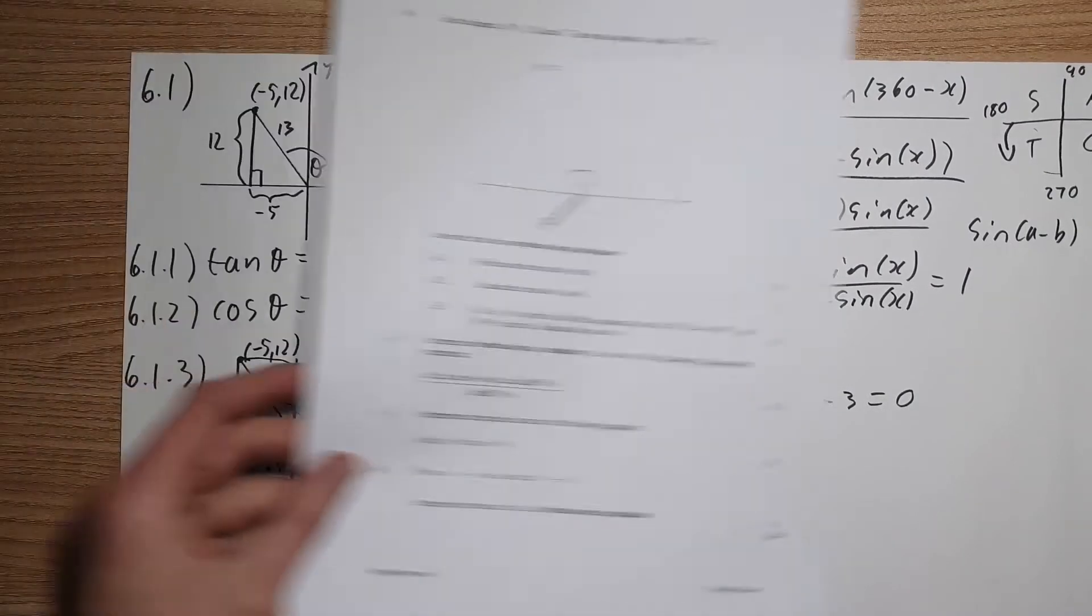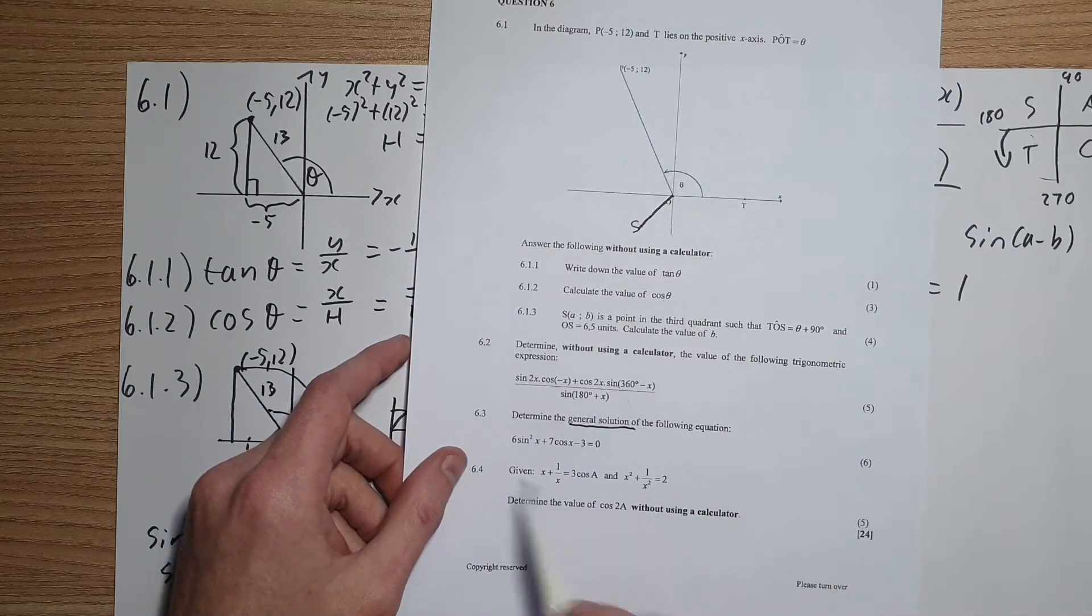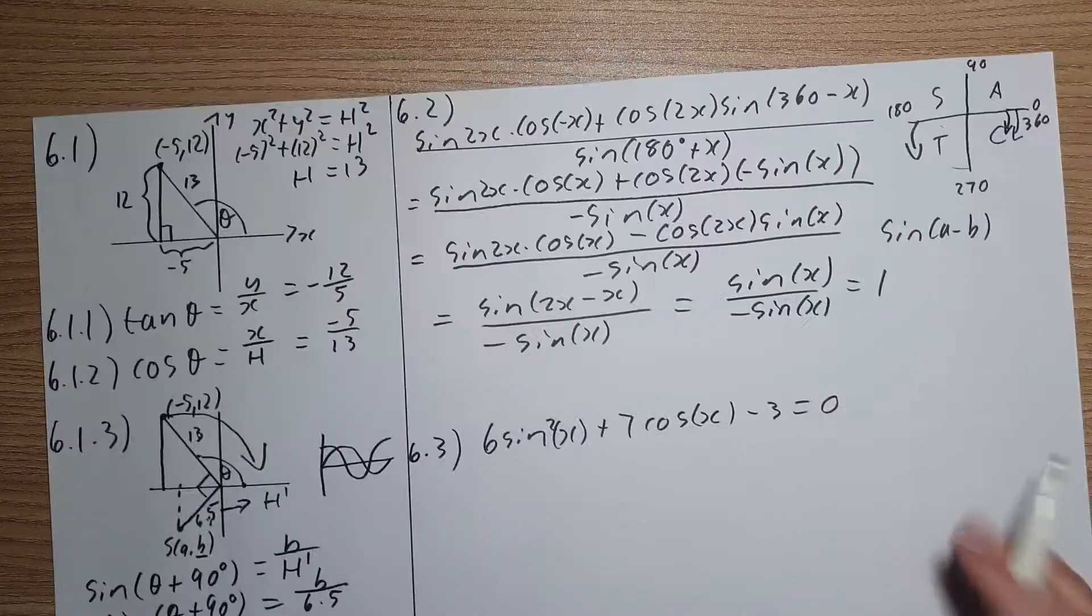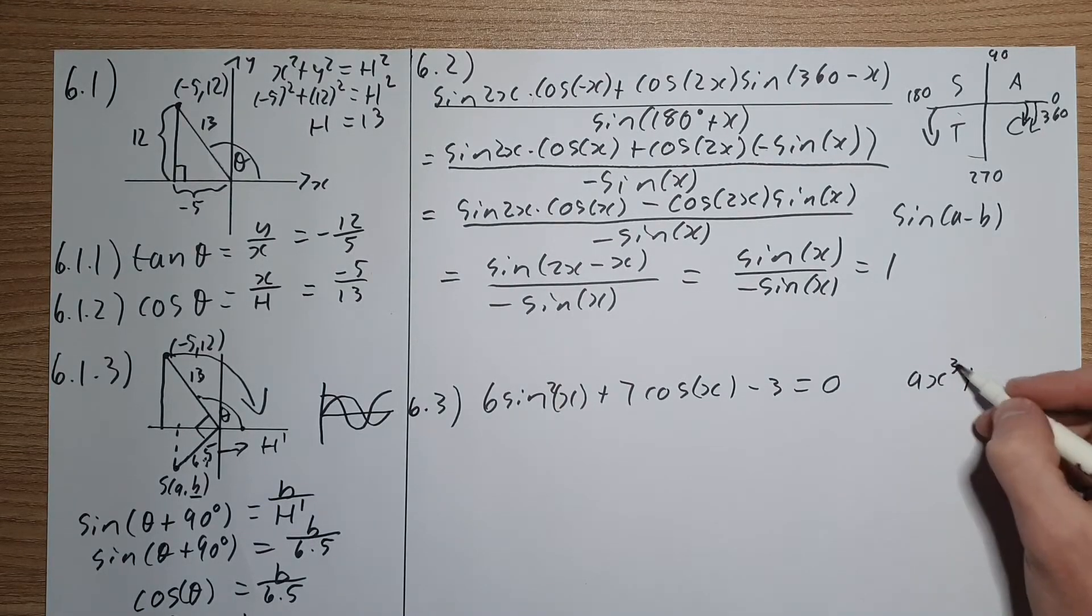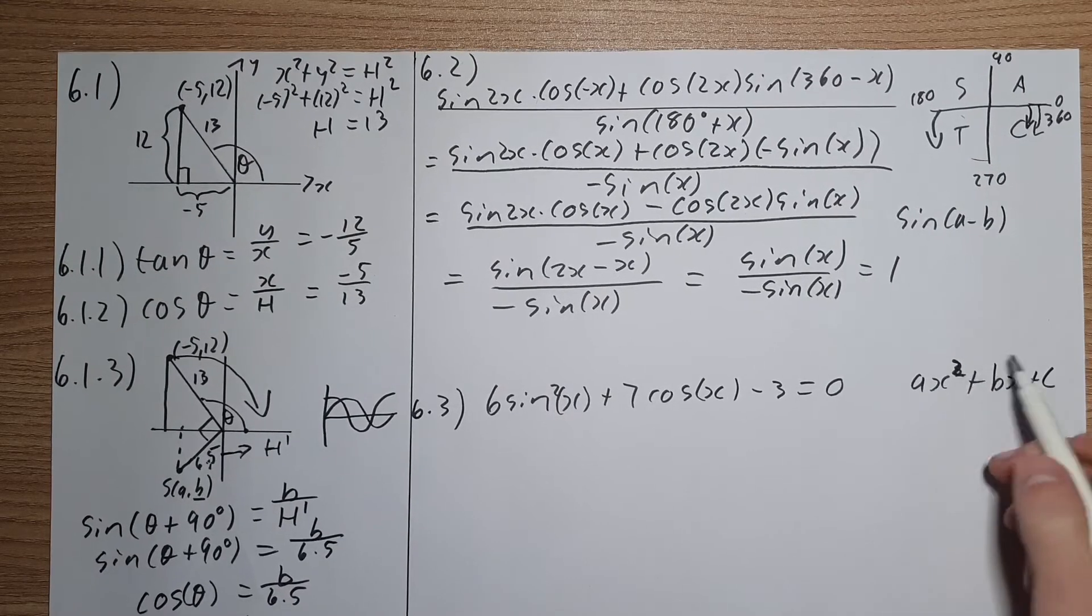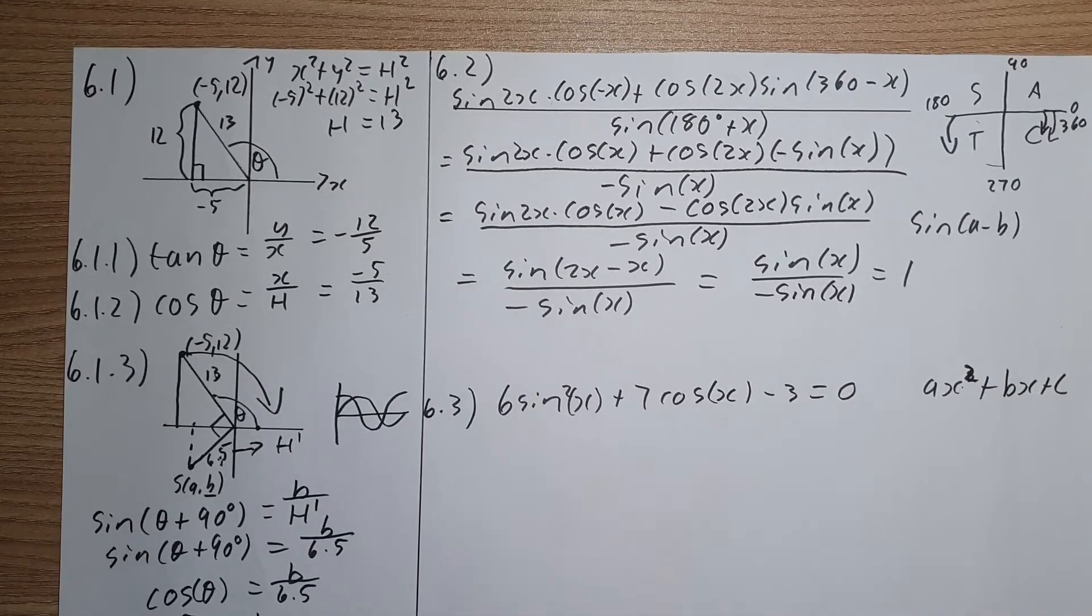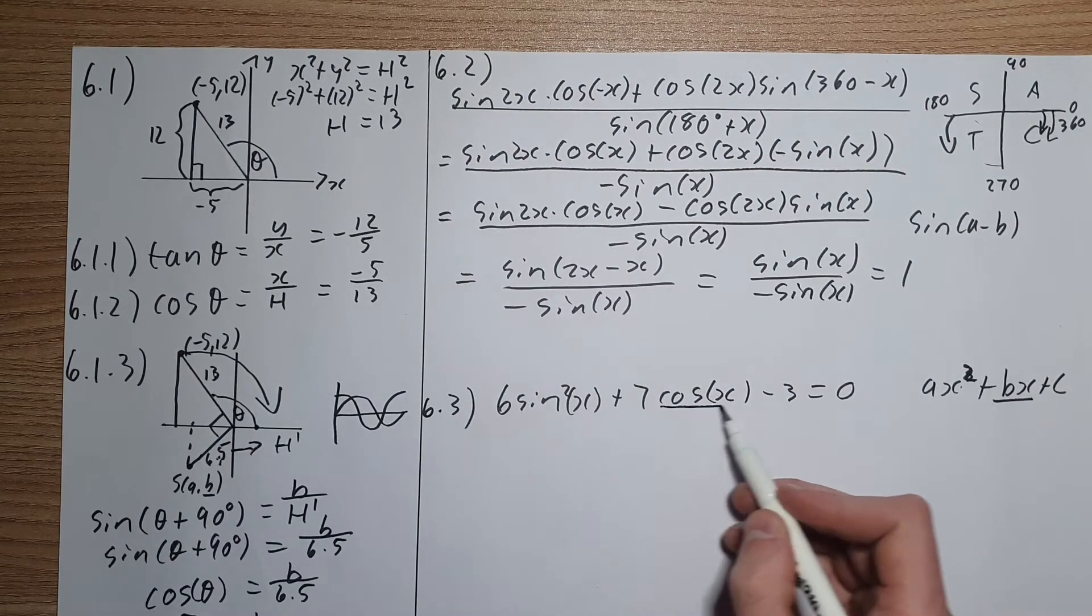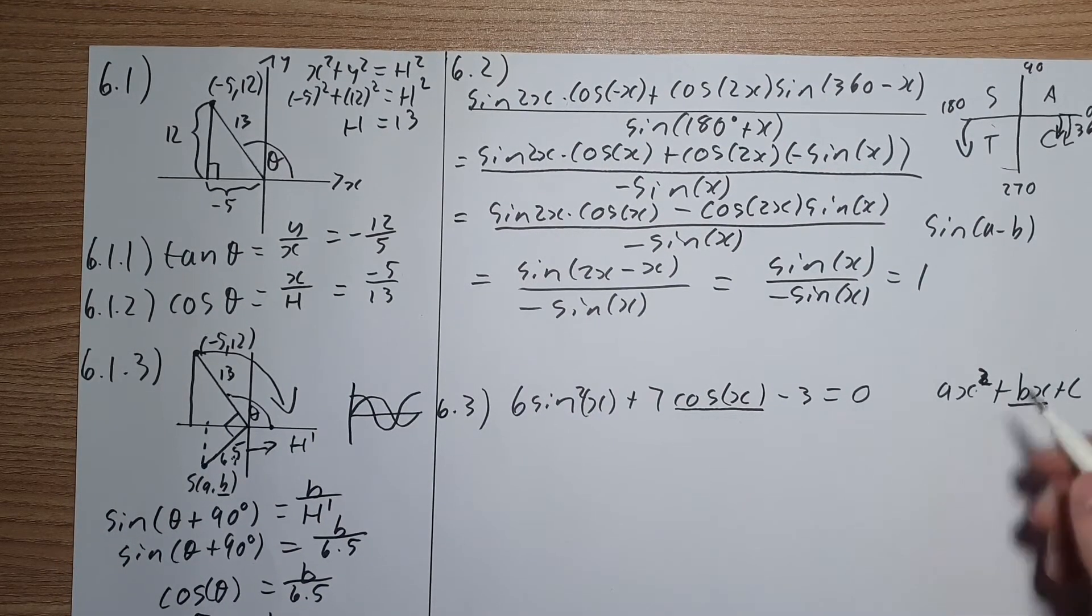Now 6.3, we've been given the following expression over here. It says determine the general solution for the following equation: 6 sin squared x plus 7 cos x minus 3. Now note that this looks very similar to a polynomial of degree 2. We know that we can factorize these, which means we need to get this expression into a form where we can factorize it. Now the clue here is look at your second value of your cos. So we need this to be cos squared. So how do we get that to be cos squared? We use our identity.